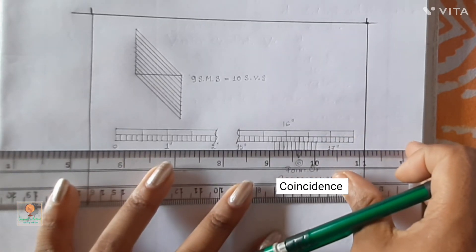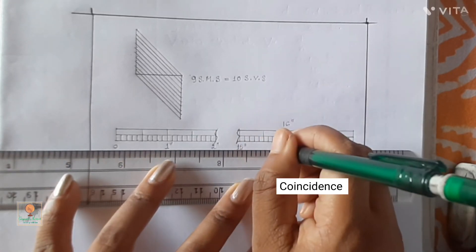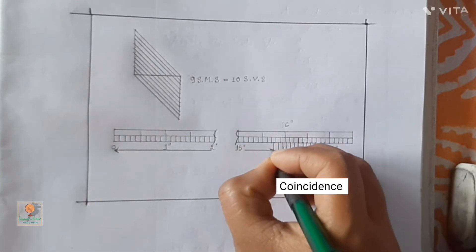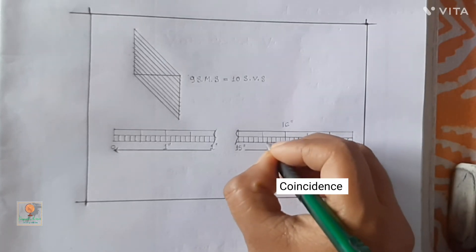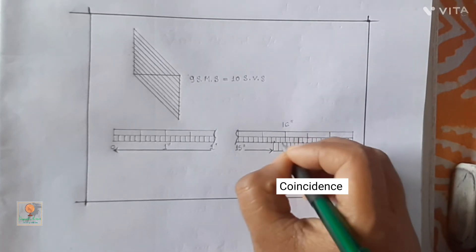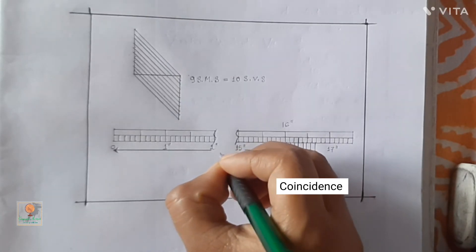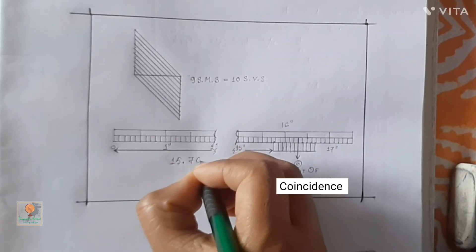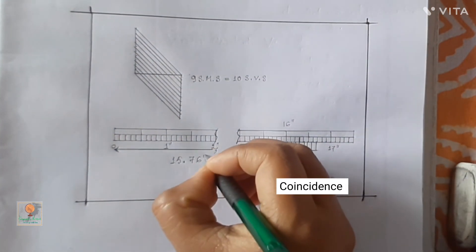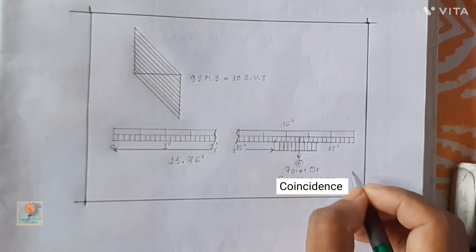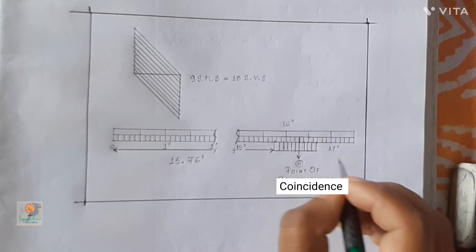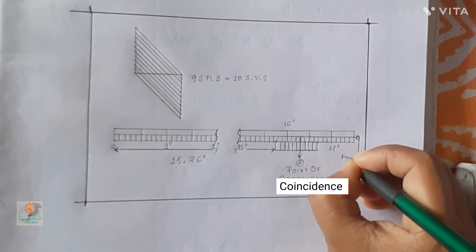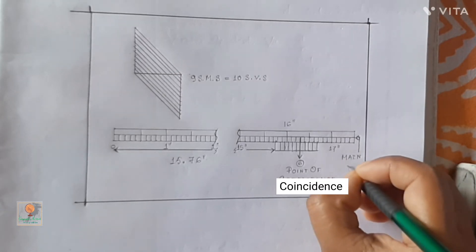We plot the point of coincidence at 6, and then plot the main scale value of 15.76 inch. Look — it perfectly matches the value 15.76 inch. After that we label the main scale and Vernier scale and give a proper heading, and our drawing is complete.